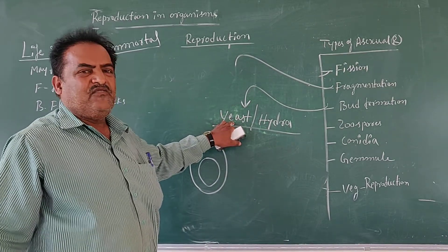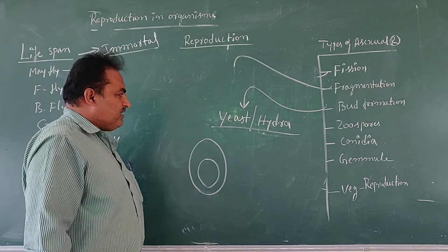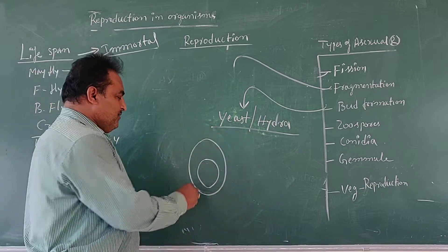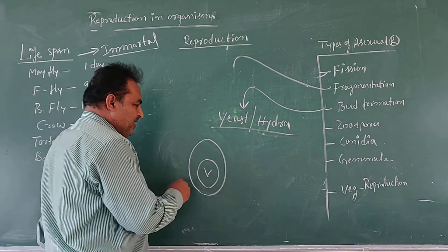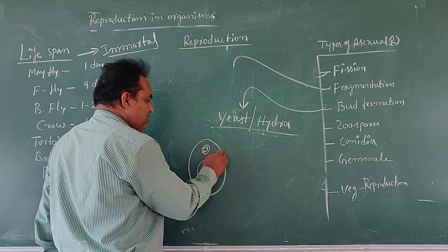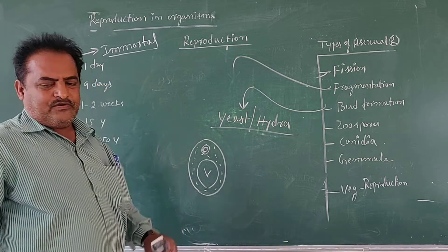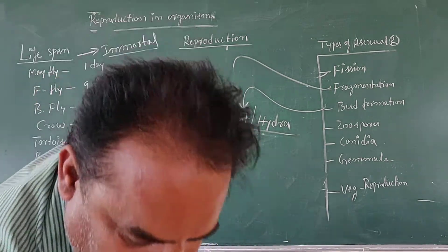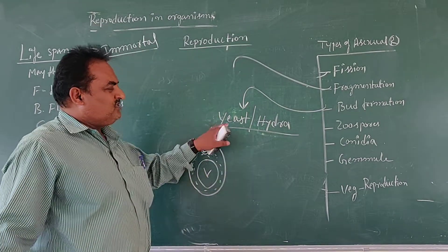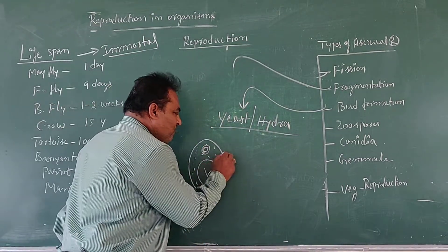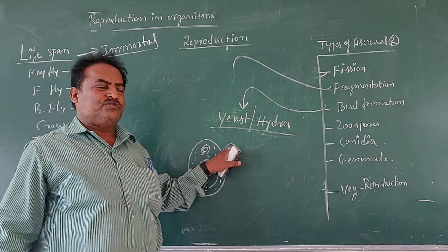Here 'myces' means fungus, so Yeast is a fungus. It is a unicellular fungus. A characteristic feature of Yeast is the presence of a large vacuole, along with nutrients, nucleus and cytoplasm. It reproduces during bud formation. At the surface of the Yeast, outgrowths are produced.